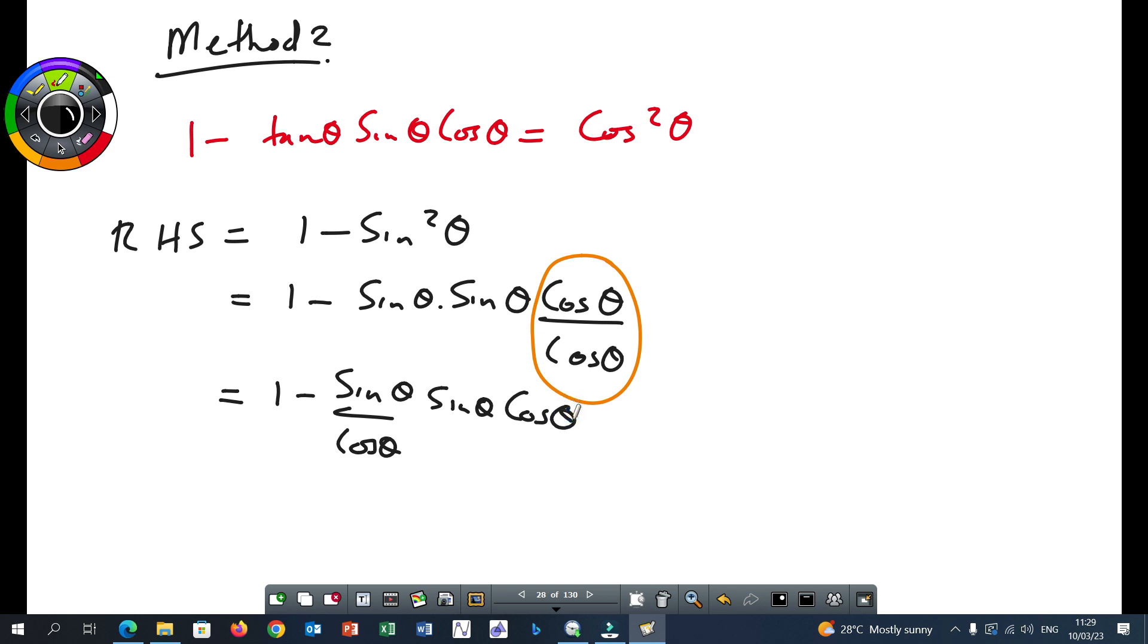It is possible to do this because of multiplication there is multiplication there. Sin theta times cos theta times cos theta over cos theta. It is the same as sin theta over cos theta times sin theta times cosine of theta. Right? Now here we have got our tan. So now I'm smiling so this will be one minus tan theta times sin theta times cos theta.